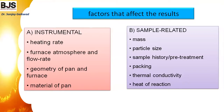Factors affecting TGA include instrumental factors: heating rate, furnace atmosphere and flow rate — whether dynamic air, static air, or nitrogen is used — and the geometry of the pan and furnace. The material of the pan also affects the analysis. Sample-related factors include mass, particle size, sample history, pre-treatment, packing, thermal conductivity, and heat of reaction.